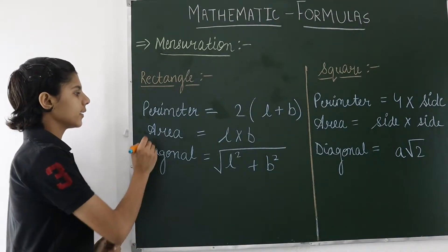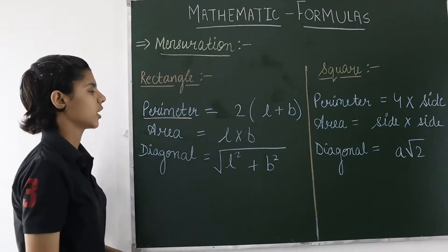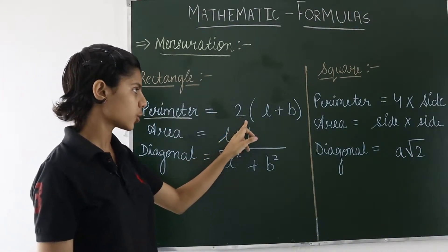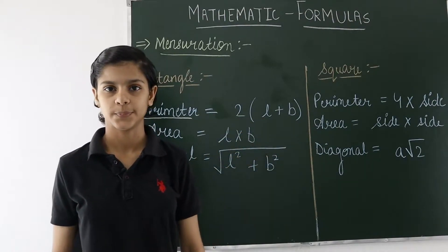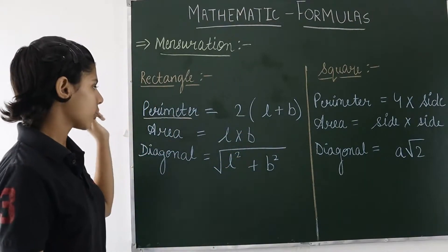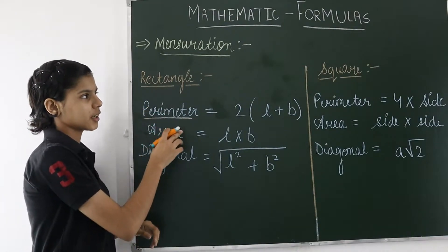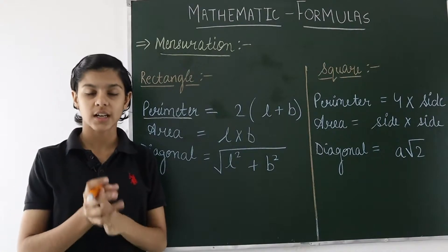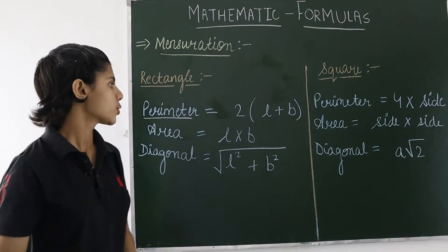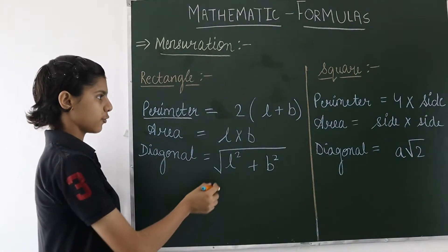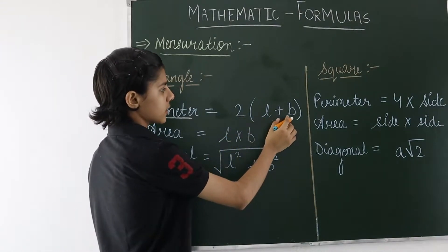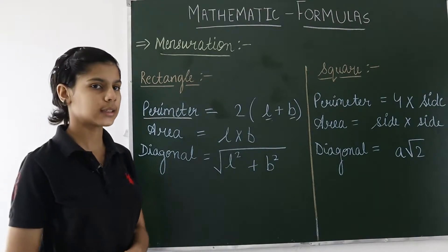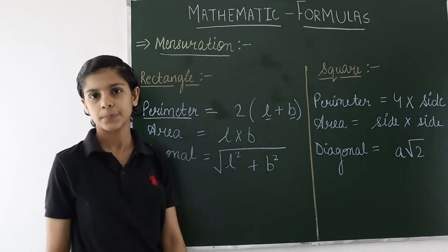So how do we find the perimeter of a rectangle? For finding the perimeter of a rectangle, we have the formula 2 into (L plus B). These are very common formulas of perimeter and area of both rectangle and square, which you may have studied in your previous classes as well. The perimeter of a rectangle is 2 into (L plus B), where L is the length and B is the breadth. We add the length and the breadth and multiply by 2.